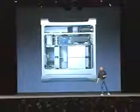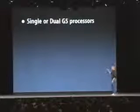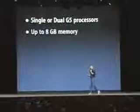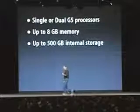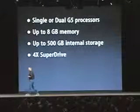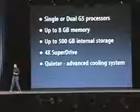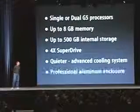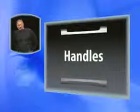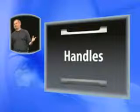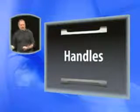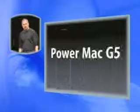This is an amazing architecture and an amazing enclosure. It's going to give us a tremendous amount of room to grow. The systems will have single or dual G5 processors, up to 8 gigabytes of memory, up to 500 gigabytes of internal storage — half a terabyte — a 4X SuperDrive, advanced cooling, and the very professional aluminum enclosure: super rugged and super beautiful. We're the only folks that put handles on things, because our pro customers love being able to take these machines around and swap them in and out when they need to. Nobody else in the whole industry does this, and we've kept that on the new G5 enclosure. The new Power Mac G5.